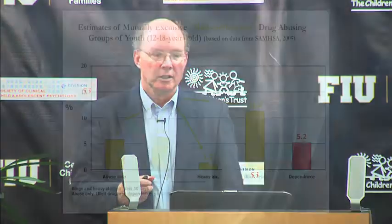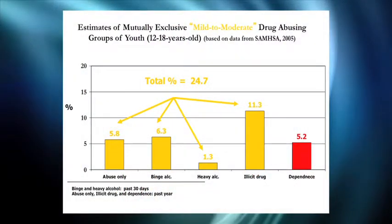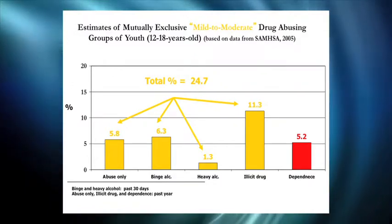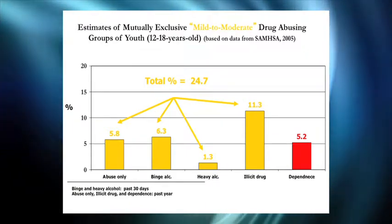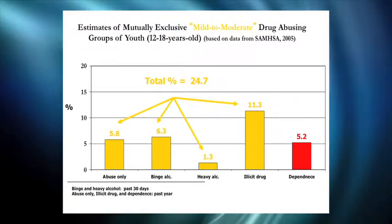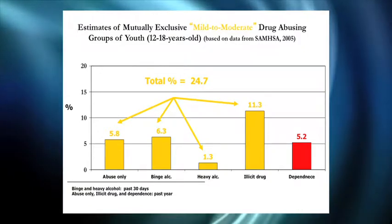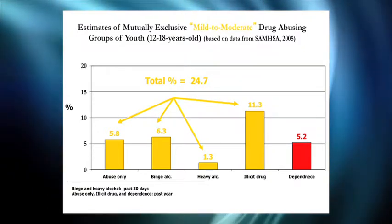There's probably a certain percentage of teenagers in any given community that might fit our definition of mild-to-moderate, whether it's abuse diagnosis, heavy drinking short of abuse, or starting to use illicit drugs without yet meeting abuse criteria. You might consider all of those worth intervening on.